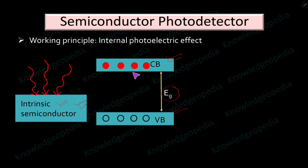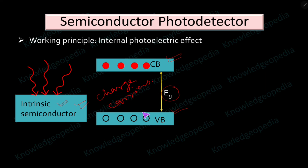Now we have a number of electrons in the conduction band and holes in the valence band — these are known as charge carriers. We have free electrons in the conduction band and holes in the valence band. If more photons are incident, the number of carriers increases and that increases the conductivity of the material. These free carriers can lead to electrical current or voltage in the device, meaning we convert incident light energy in the form of photons into electrical energy.